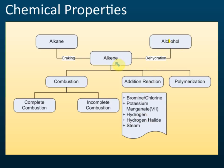Alkenes undergo three types of chemical reactions: combustion, addition, and polymerization. For addition reactions, we add something into the alkene. We can add halogens — bromine, chlorine, or iodine — into the alkene.